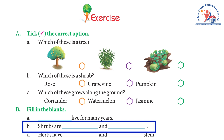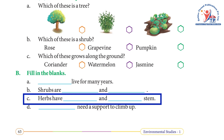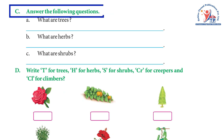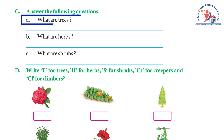Exercise B — fill in the blanks: (a) Dash live for many years — answer: trees. (b) Shrubs are dash and dash — answer: short and bushy. (c) Herbs have dash and dash stem — answer: soft and green. (d) Dash need a support to climb up — answer: climbers.